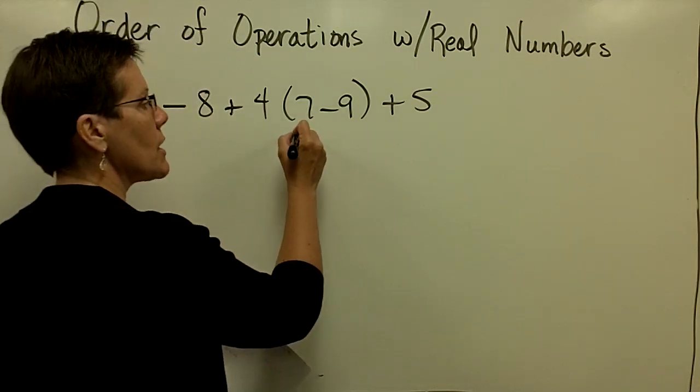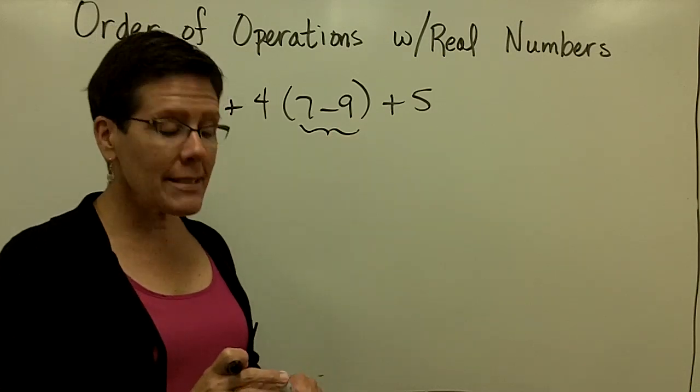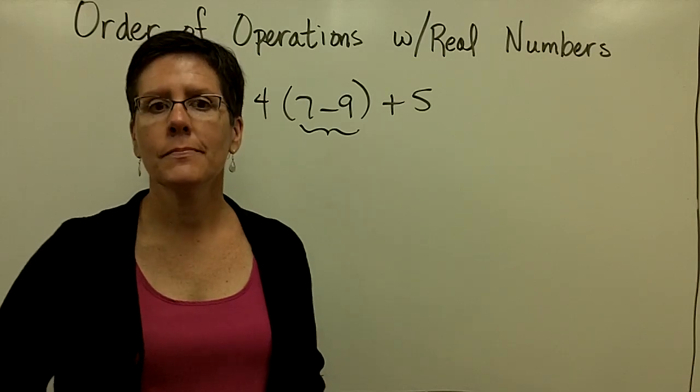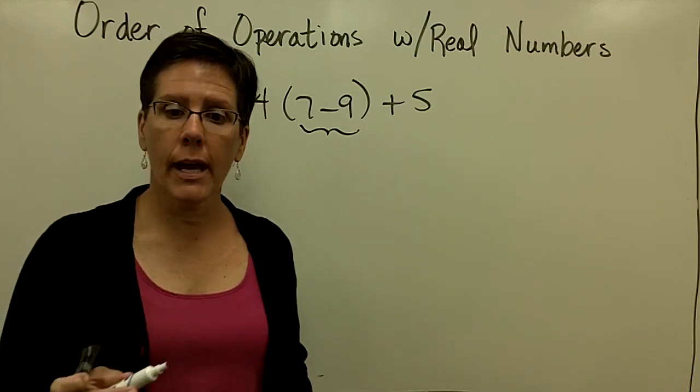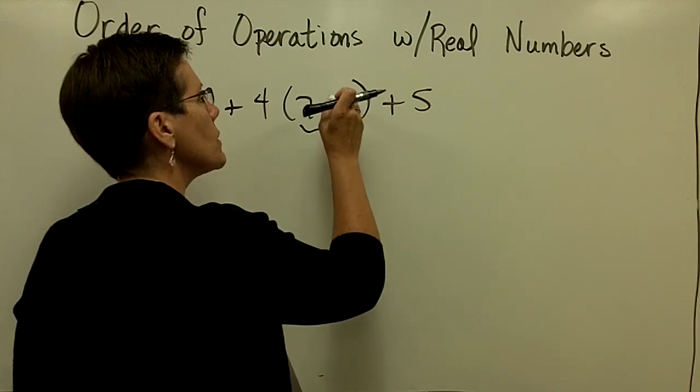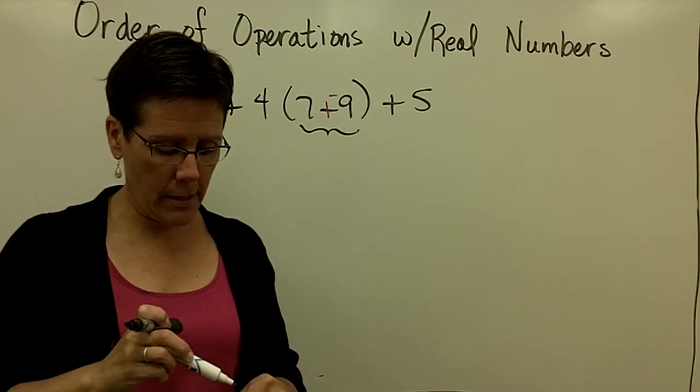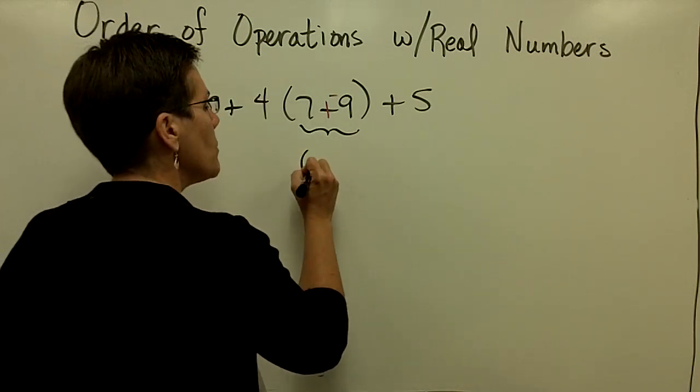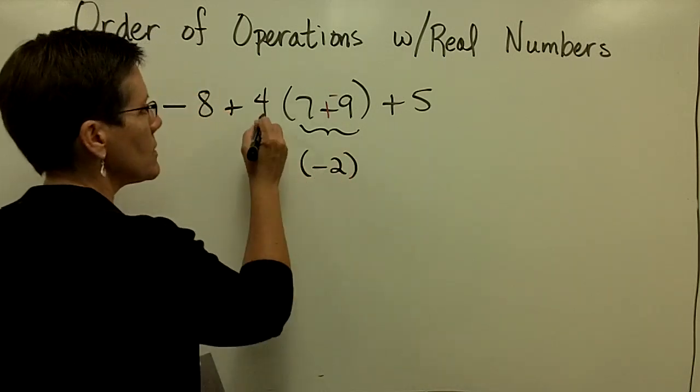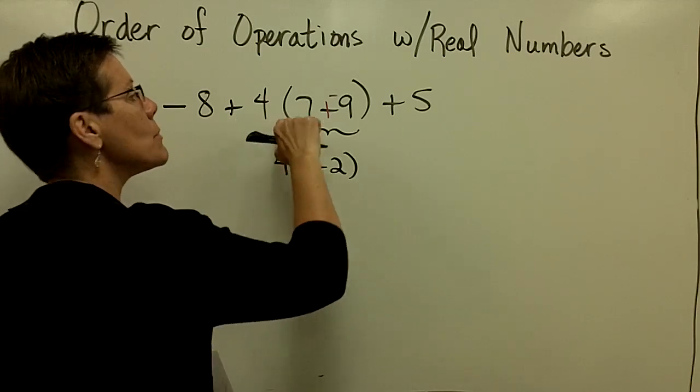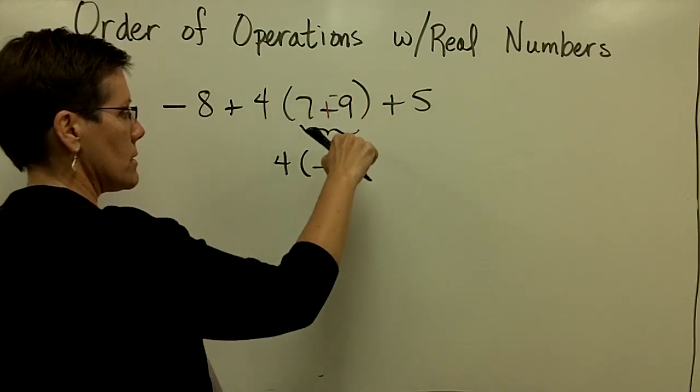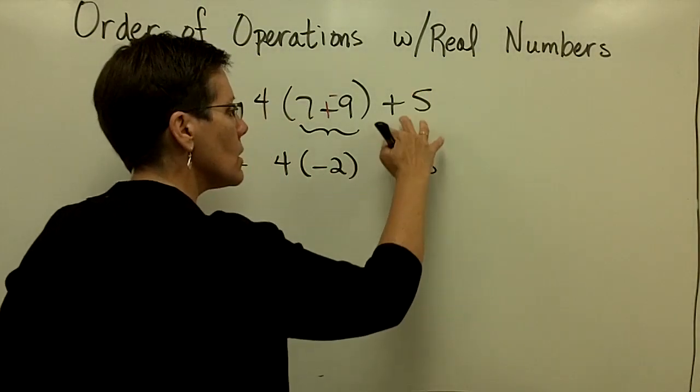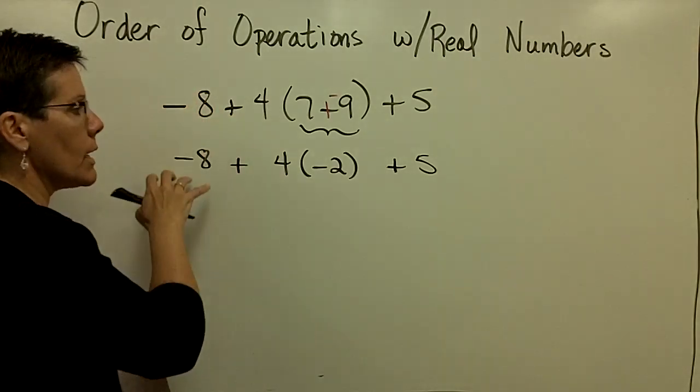So order of operations says I should do what's in the parentheses first here. And when I take 7 and subtract 9, I get negative 2. I'm hoping you can do that in your head, but if you need to write 7 plus negative 9 equals negative 2, that would be fine. Because that's a signed number, keep that in parentheses, because in front of that I have 4 times whatever that is. Bring everything down. Can you see that I'm trying to just drop everything down as you see it.